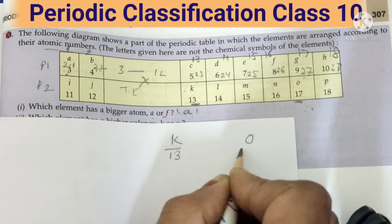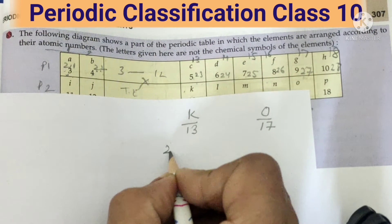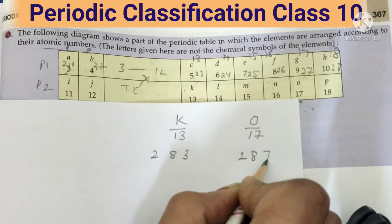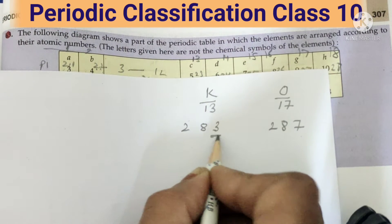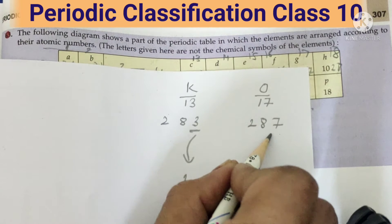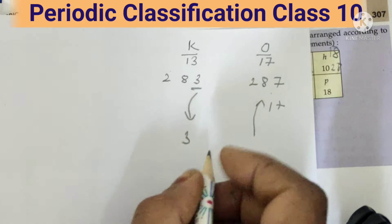K and O. So K has atomic number 13 and O has atomic number 17. Let's write down their configuration: two eight three, and here two eight seven. So how many they donate? They donate three. And they do not donate, they accept one.